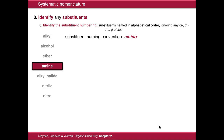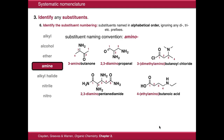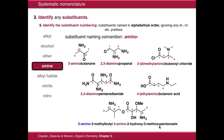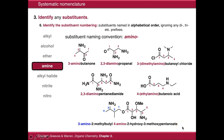Amine substituents are named amino. So here are some examples: 3-aminobutanone, 2,3-diaminopropanol, and so on. Here's a more complicated example showing an amino group both on the alcohol side and on the carboxylic acid side of an ester. These are quite complicated examples, but they show you how to format and structure a name.